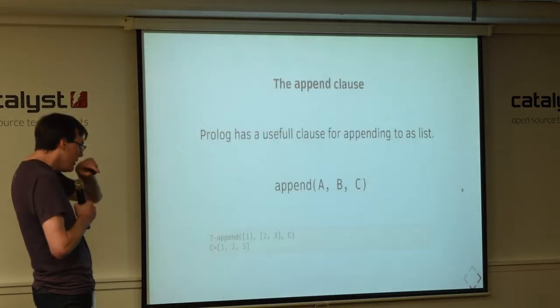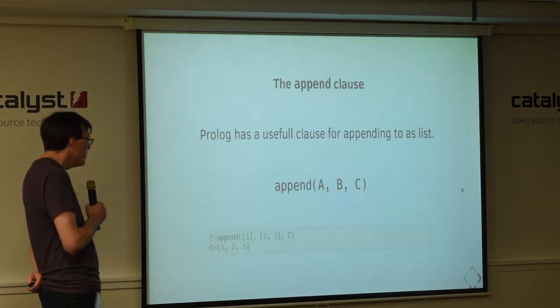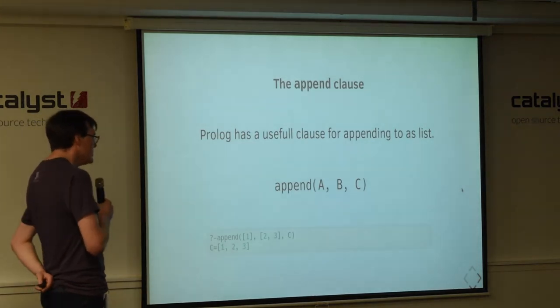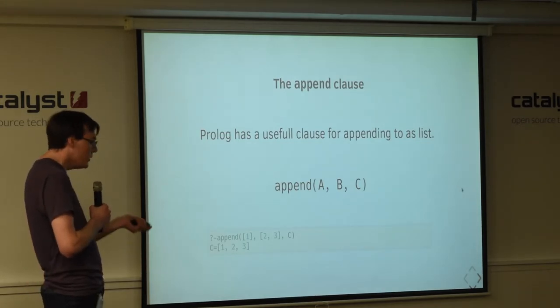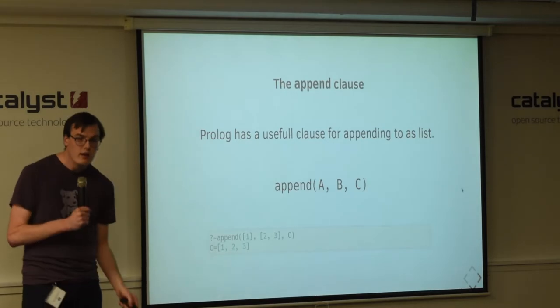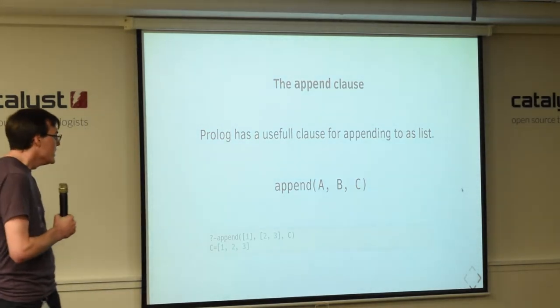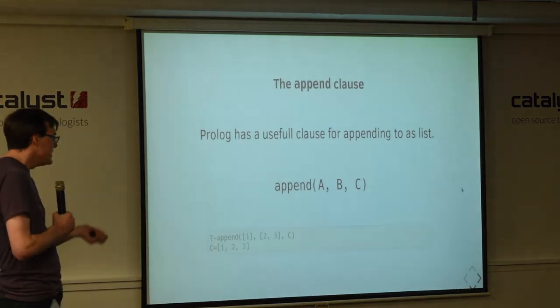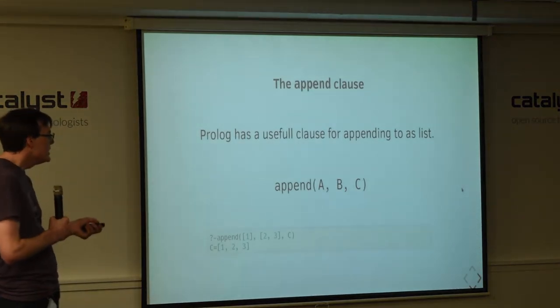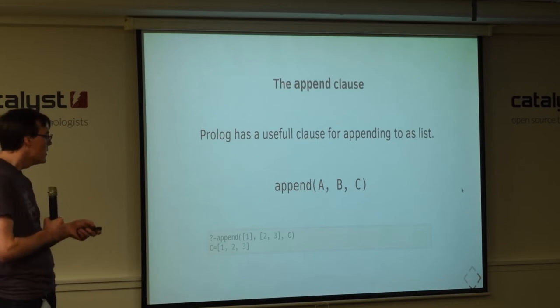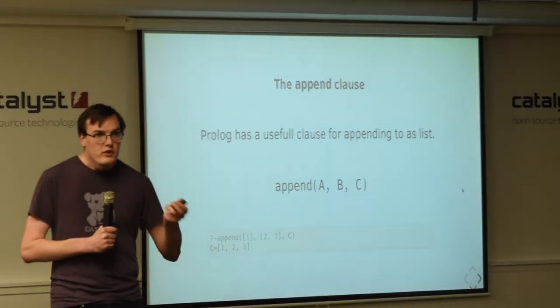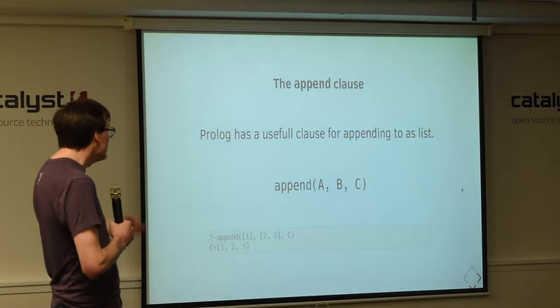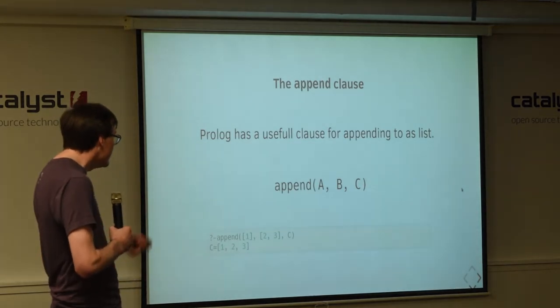So, the use case down the bottom there seems fairly intuitive. We give it list one of one, list two of two and three. And prologue tells us that list c is one, two and three. But remember, what prologue is doing here is actually finding a value for c which satisfies, which makes true the rule that c is the result of appending b to a. And so, it's actually going through a lot of different values for c until it finds one that matches. And then it tells us what that is.